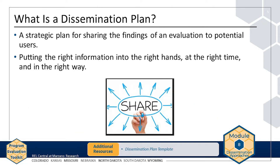If you expect your evaluation findings to be used, you need to put the right information into the right hands at the right time, and in the right way. Being strategic in your dissemination activities will help you avoid wasting time and resources, and communicate more effectively. By carefully developing a dissemination plan, you can use effective strategies to reach the right audience, share the right message, and apply the right approach and timing.